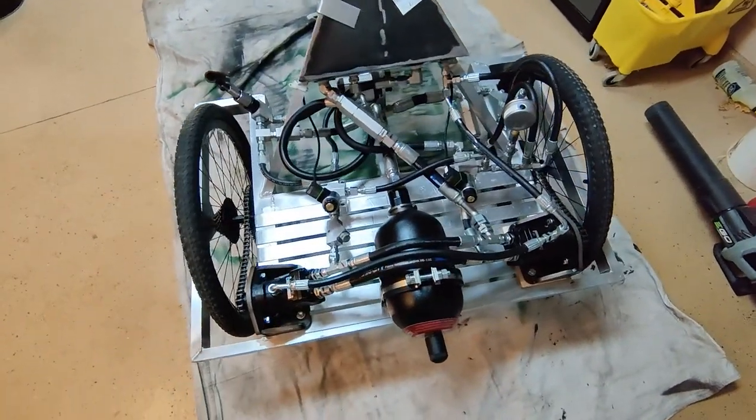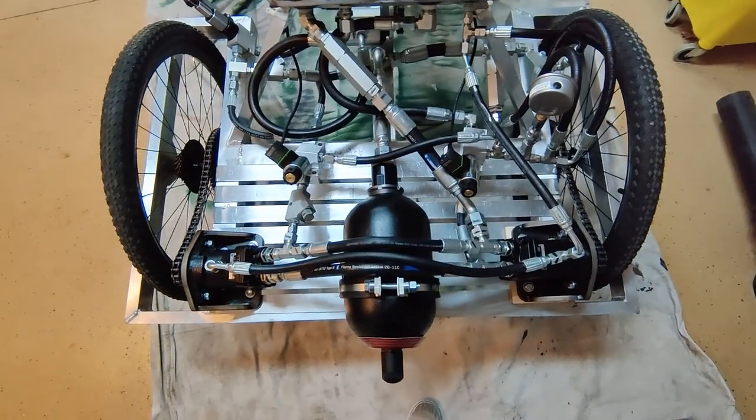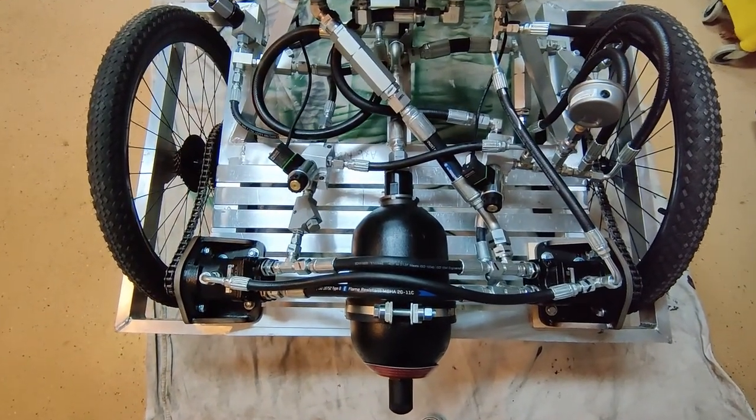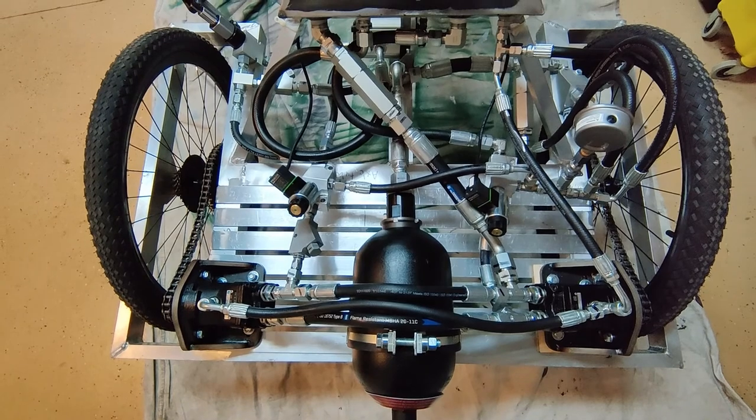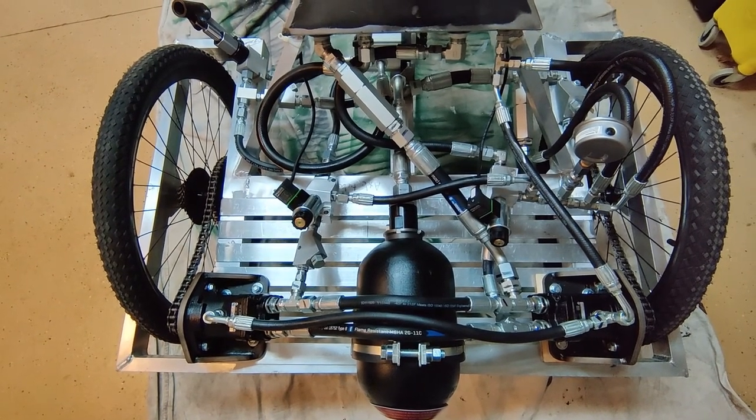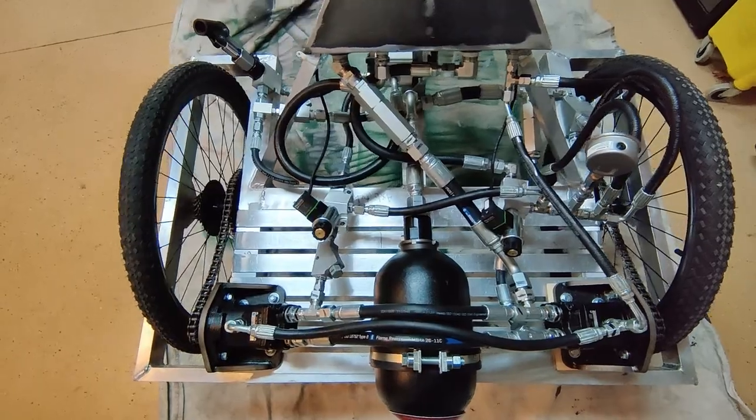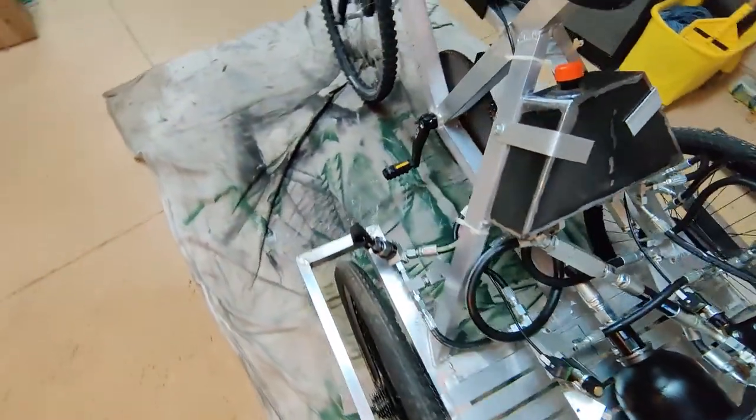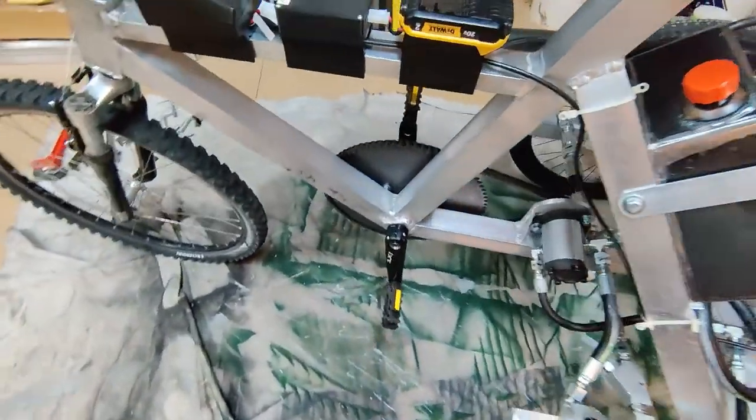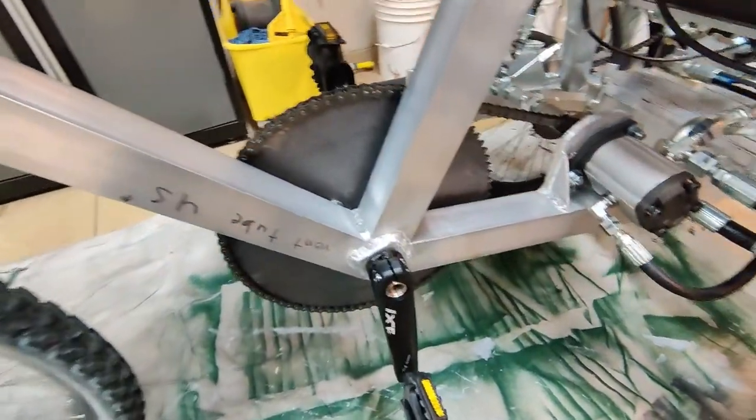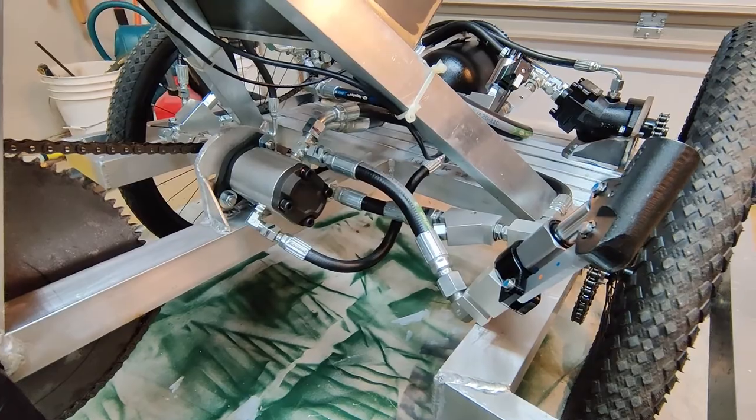Our hydraulic system is fairly unique. Starting with the output, we have two bent axis piston motors running in parallel attached to each wheel. This provides a hydraulic differential for our system. We have a gear pump that transmits power from the rider, and we have a hand pump for charging the accumulator.